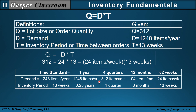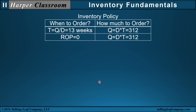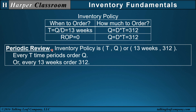Watch for a video in the Harper Classroom on time conversions. Now let's copy these values in the inventory policy table and represent them in the different review systems. First, the periodic review. The inventory policy will be TQ, where T is the inventory period of 13 weeks and the lot size is 312. So every T time period, order Q — or every 13 weeks, order 312.